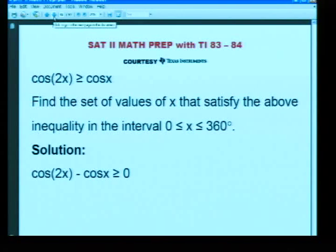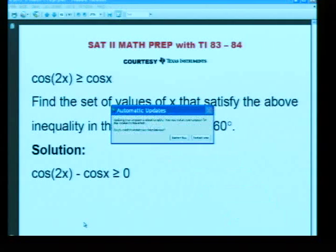What we will do is we will sketch the graph of cos(2x) minus cos(x) and then we will find the set of x values for which this expression is greater than or equal to 0. We will find the set of x values that the graph lies above the x axis or the graph intersects the x-axis.